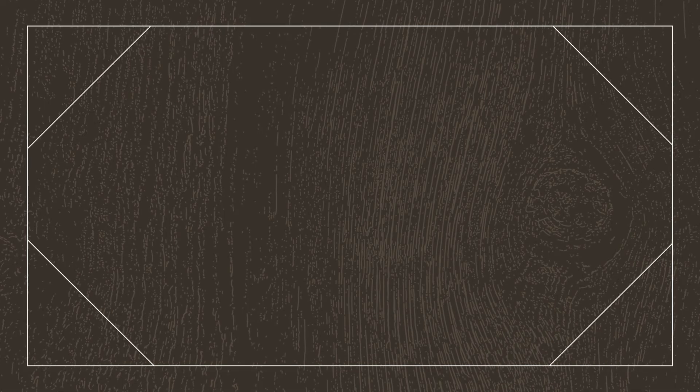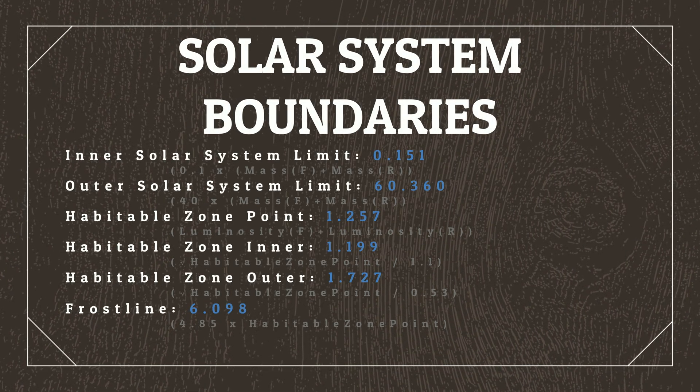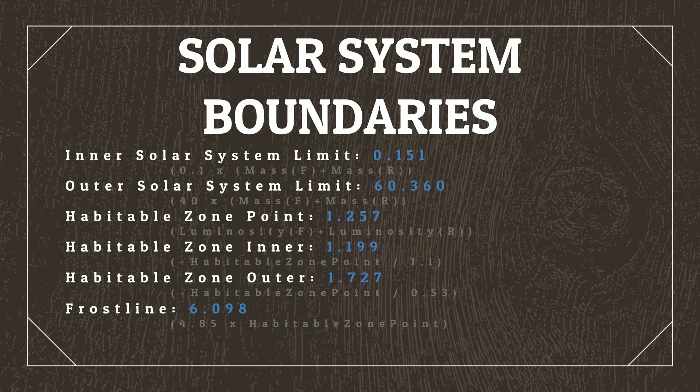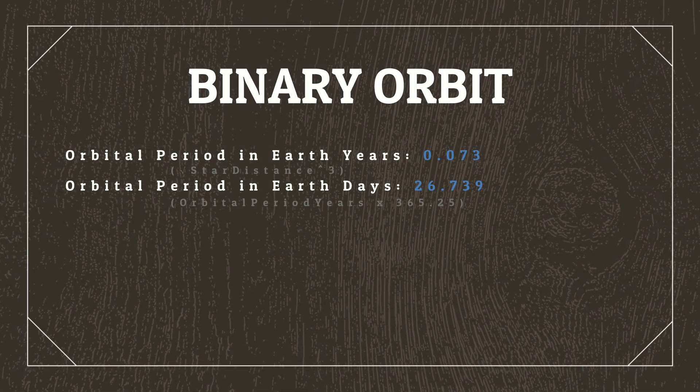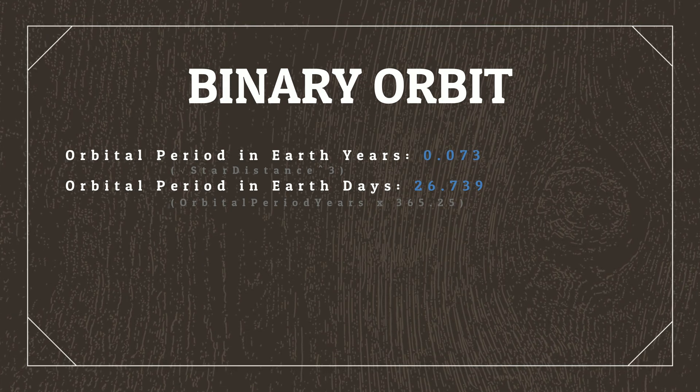We can also determine the inner and outer points of the solar system that planets can orbit in, the crucially important habitable zone — which is where we'll need to place Locus — as well as the frost line, the point where compounds such as water, carbon dioxide, and methane will condense into solid forms due to lack of heat. We're also able to determine the time it takes for the stars to orbit each other in Earth years and days. That's a lot of information, but as long as your stars don't come within 0.1 AU of each other and you aren't putting your planets too close to the stars, everything should be okay.